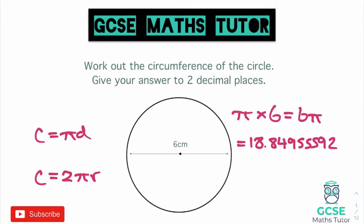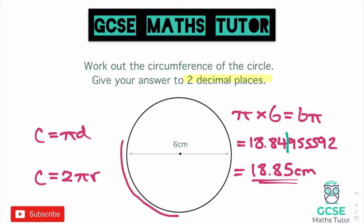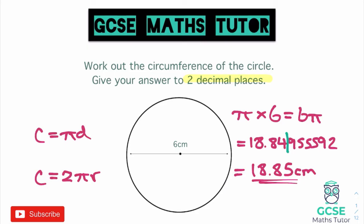That is the circumference of the circle. This question said to give the answer to two decimal places, so we need to round. The second decimal is the 4. After the 4 there's a 9, so it rounds up to 18.85 centimetres. Just to clarify, the circumference is the distance all the way around the outside of the circle — if you started at one point and went all the way around, that distance is the circumference. So our answer is 18.85 centimetres.